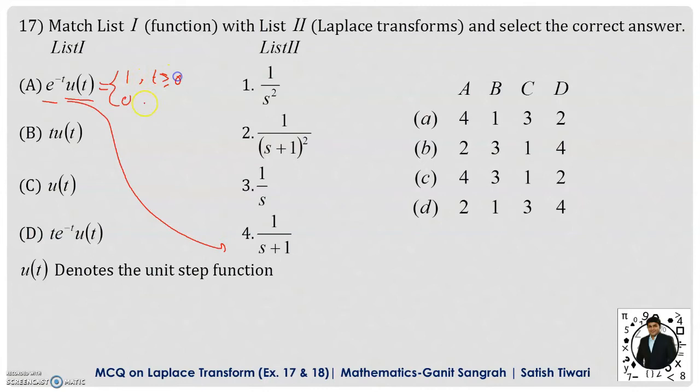So if I multiply 1 with e to the power minus t, I will get e to the power minus t and its Laplace transformation will be the same. And if I multiply with 0, I will get the complete function as 0, and the Laplace transformation for 0 will be 0.